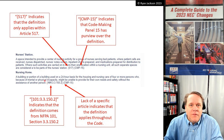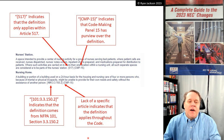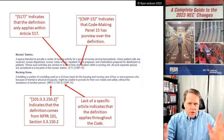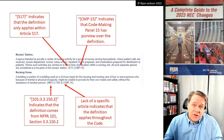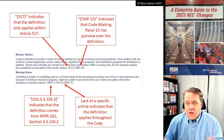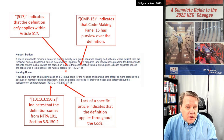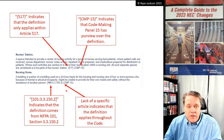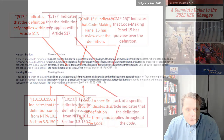The bracketed reference indicates NFPA 101, Section 3.3.150.2 — the source of the nursing home definition. Again, that level of detail matters mainly to those in the code change process, but you should at least know what it means. The key takeaway here: 'nursing home' applies throughout the code because it has no parenthetical article reference, whereas 'nurses station' applies only to Article 517.